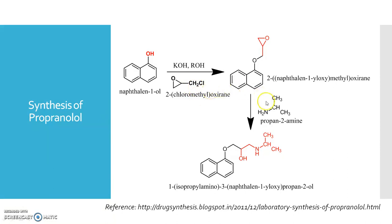The role of propanamine: the primary nitrogen being electron-rich acts as a nucleophile, which will attack on the electron-deficient carbon of the epoxide ring, and this will give the racemic form of propranolol.